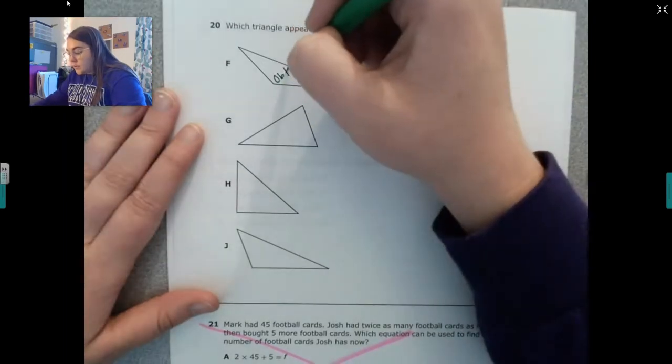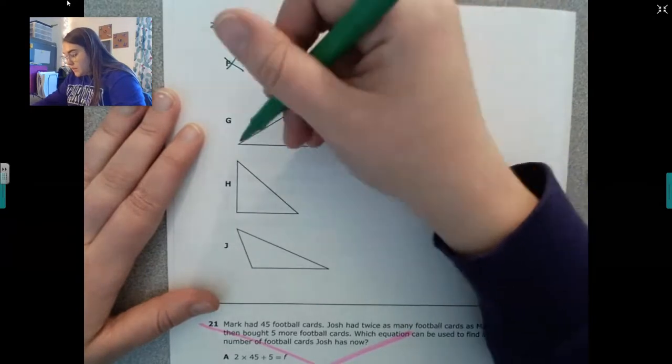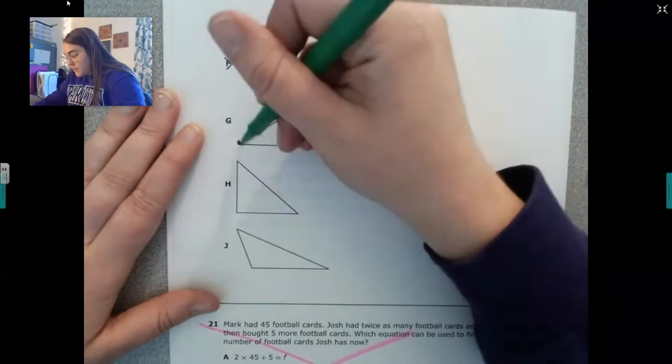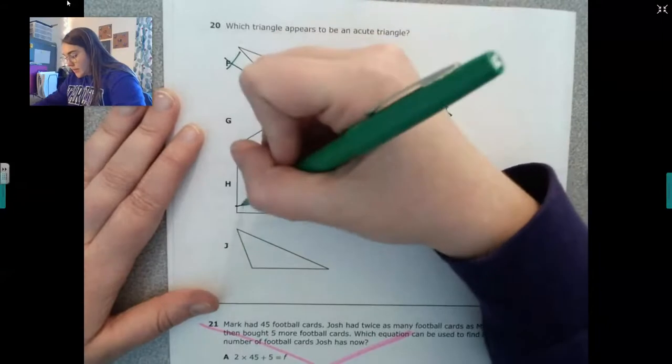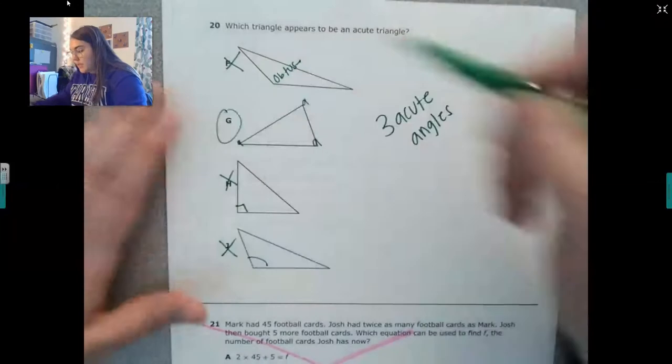I know that this is obtuse, so it can't be F. This is acute, this is acute, and this is acute. I'm going to check the others. This looks like a right angle. And this is definitely obtuse. So it is G.